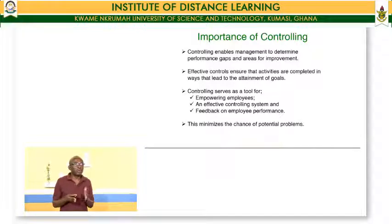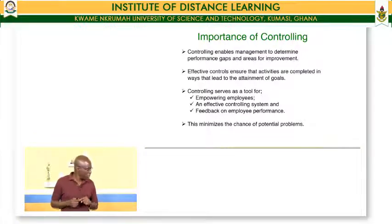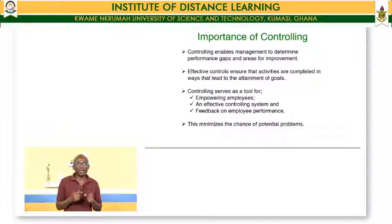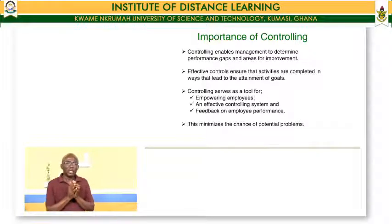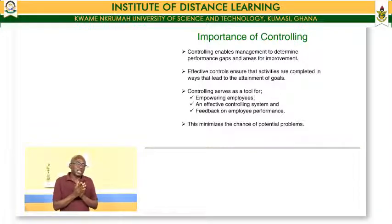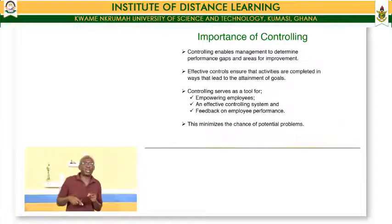Effective control ensures that activities are completed in ways that lead to attainment of goals. Controlling therefore serves as a tool for empowering employees. It does not mean that we are trying to restrict you or put fear into you. Even though it is an emotive word that invokes fear, it is a means of making sure that employees have the requisite skills and are doing what is right. If we control and we see that something is wrong, we provide corrective measures and the employee begins to acquire the requisite skills. And so it gives feedback to the employees.